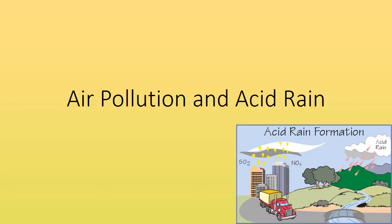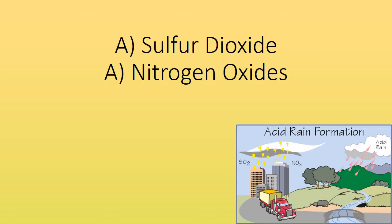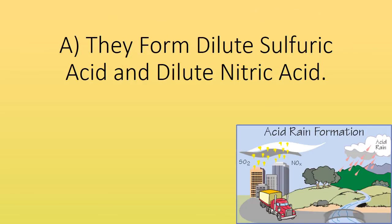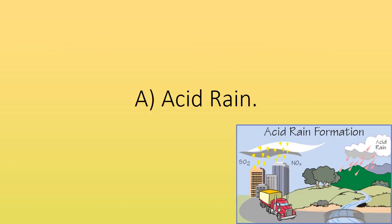Air pollution and acid rain. What are the main harmful gases released from burning fossil fuels? Sulfur dioxide and nitrogen oxides. What happens when sulfur dioxide and nitrogen oxides mix with clouds? They form dilute sulfuric acid and dilute nitric acid. What is it known as when it falls? Acid rain.